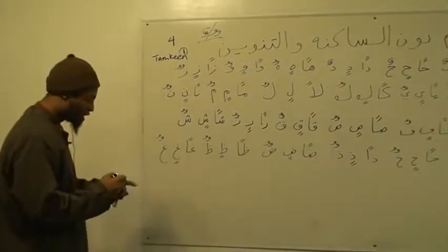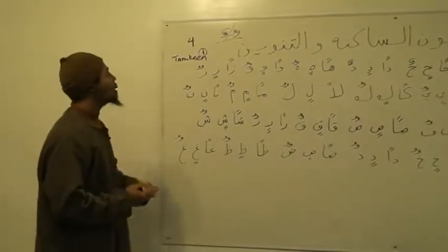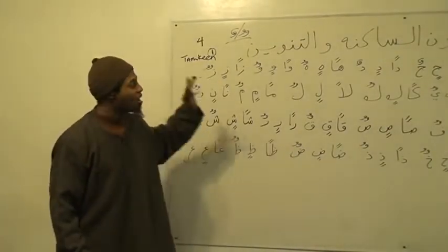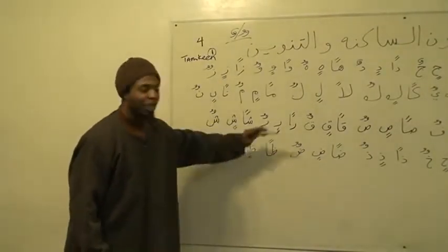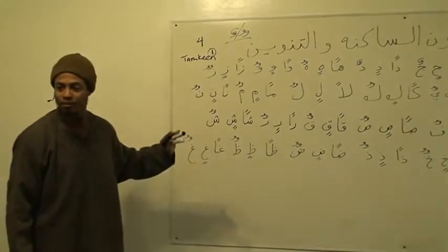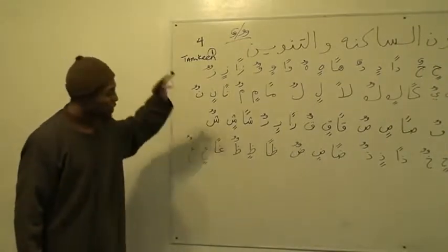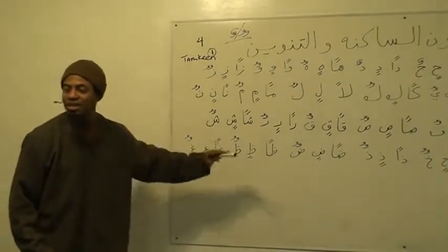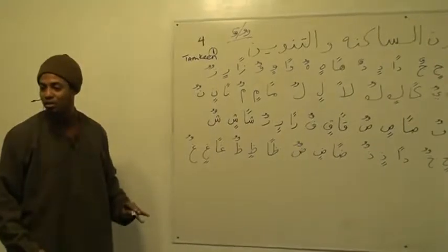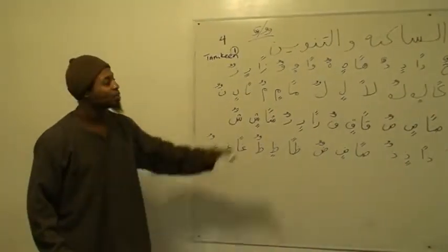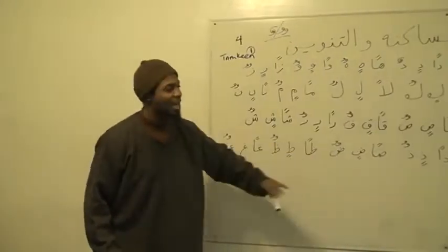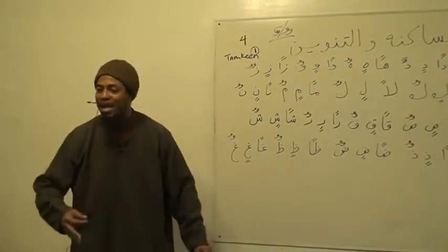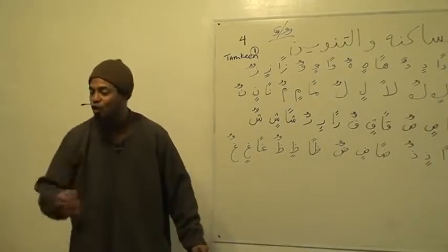These are the examples that you will see of Tanween. These are all of them — there are no others. This is Tanween. Between every letter, there's only these letters, and they only come as: an, in, un.